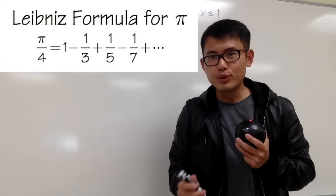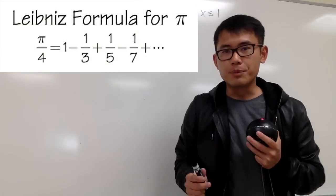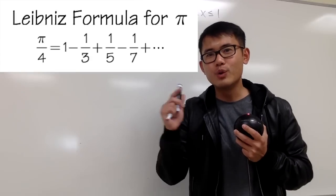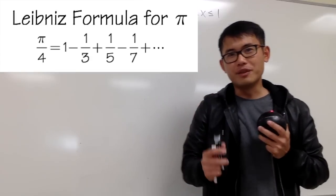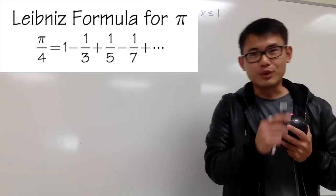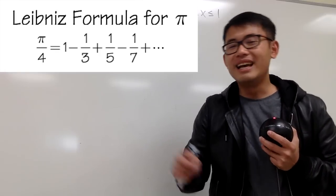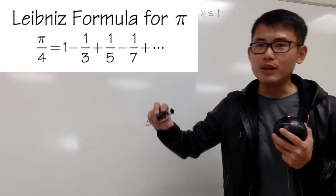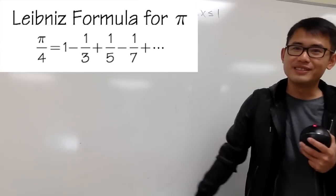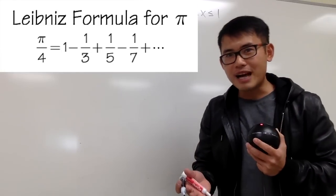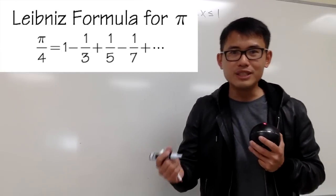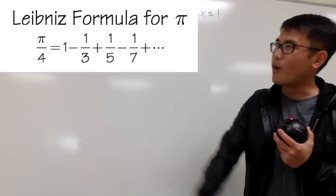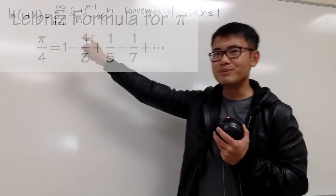In this video, I will show you guys how to prove the Leibniz formula for pi. Namely, I will show you that pi over 4 is equal to 1 minus 1 over 3 plus 1 over 5 minus 1 over 7, and so on forever. That's an alternating series with all the odd numbers in the denominators. This is usually done by using the series for inverse tangent, but today I will show you how to use the series for logarithm.